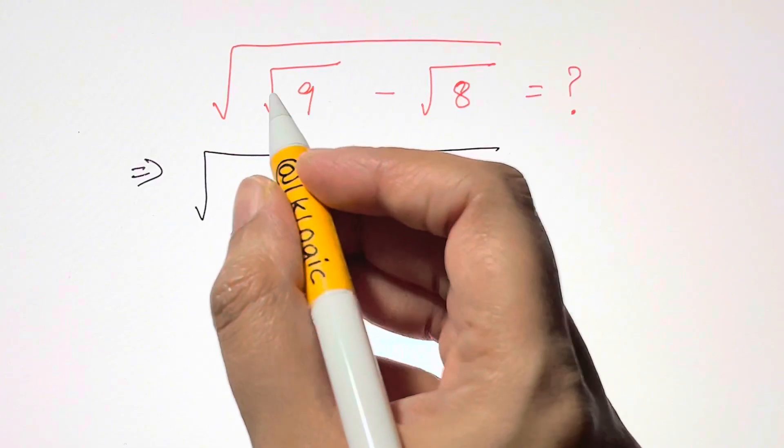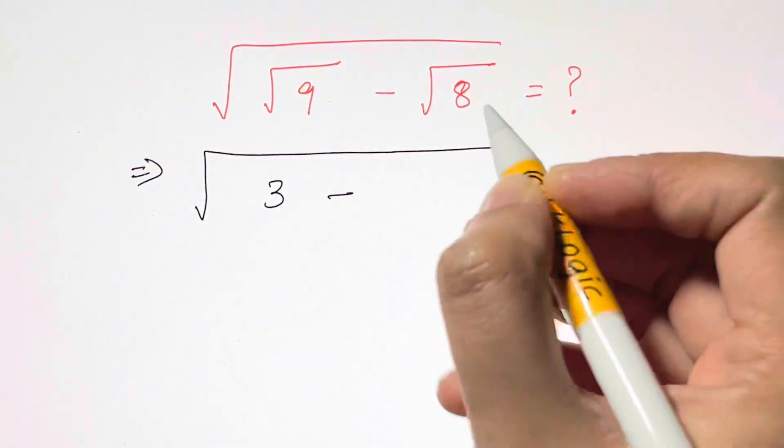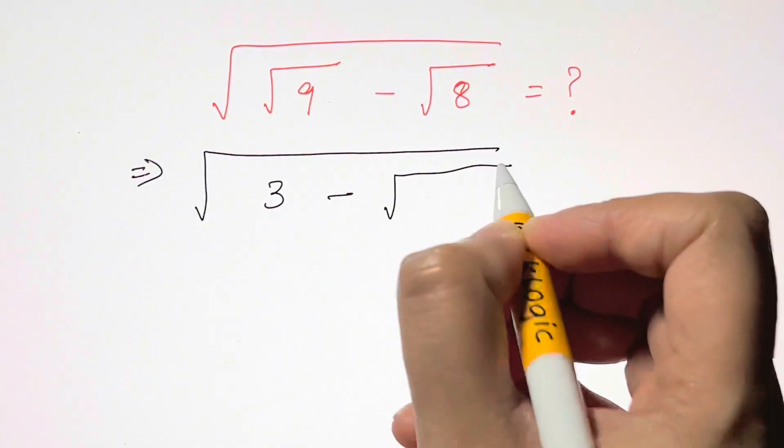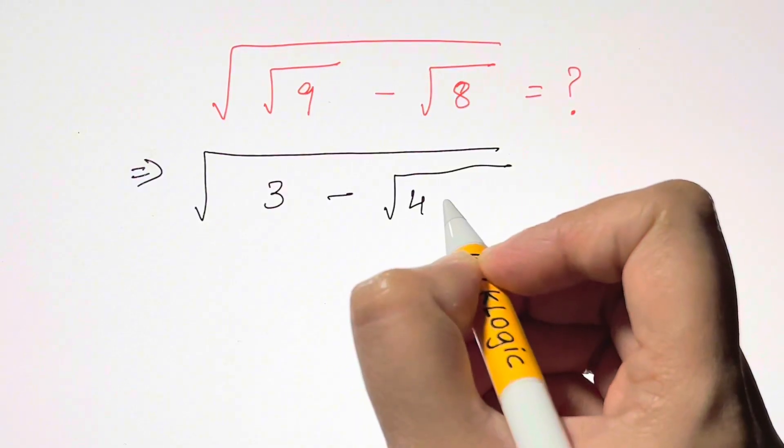So under the root we have square root of 9 is 3, we know that, and square root of 8 can be written as 4 times 2.